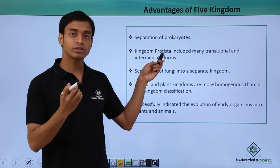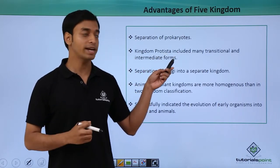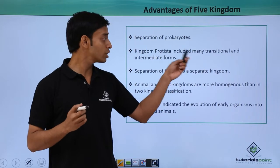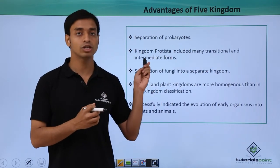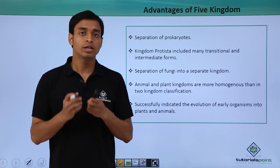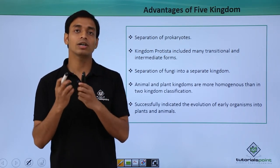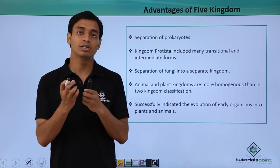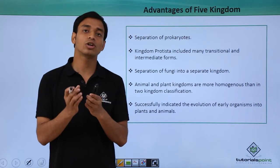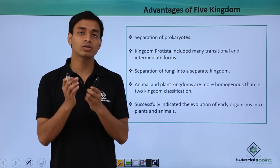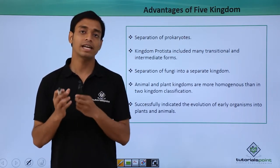The kingdom Protista actually includes unicellular eukaryotic organisms. This was important because many of the transitional and intermediate forms were included in this group called Protista. Before this classification, all the unicellular organisms of plants and animals were included together, even though they have certain physiological characteristics quite different from those of the plant and animal kingdoms.